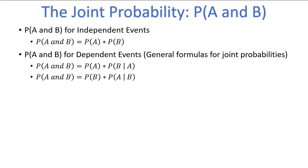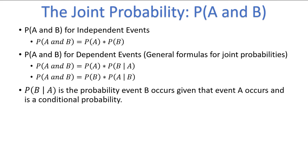You may have noticed that we've introduced a new symbol here — the vertical line — which means 'given.' This statement is read 'the probability of B given A,' and is the probability that B occurs given that event A occurs. We call probabilities written like this conditional probabilities, because the probability of the first event listed is conditional on whether or not the second event occurs.